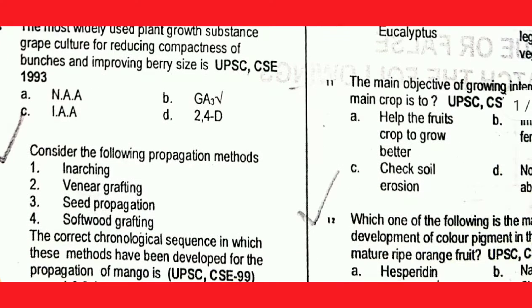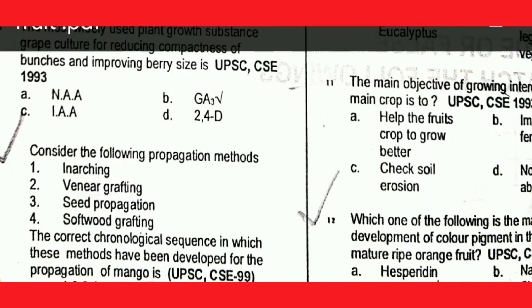Next question: the main objective of growing intercrops with the main crops is to utilize the space and resources efficiently.